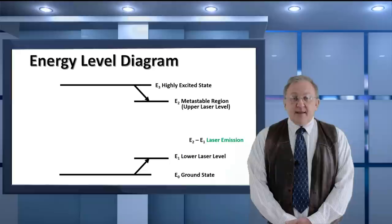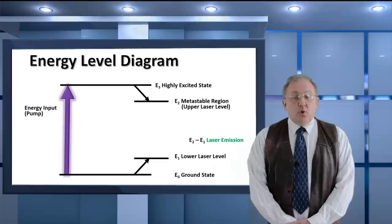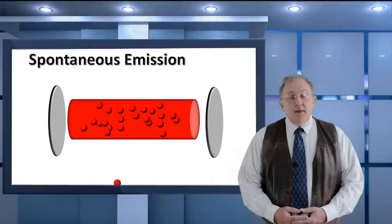Looking at the energy level diagram, an electron is pumped to a highly excited state, and transitions to a metastable region. The electron will seek its natural or ground state, however, it must release energy, and it does so in the form of a photon.